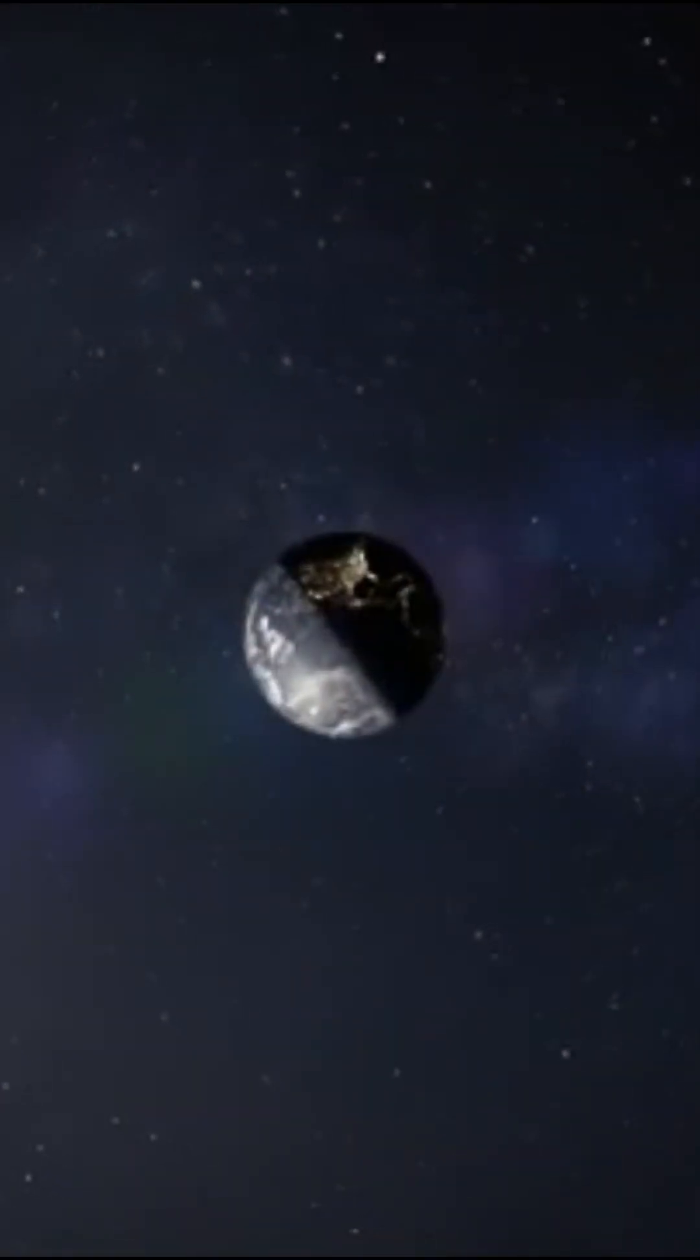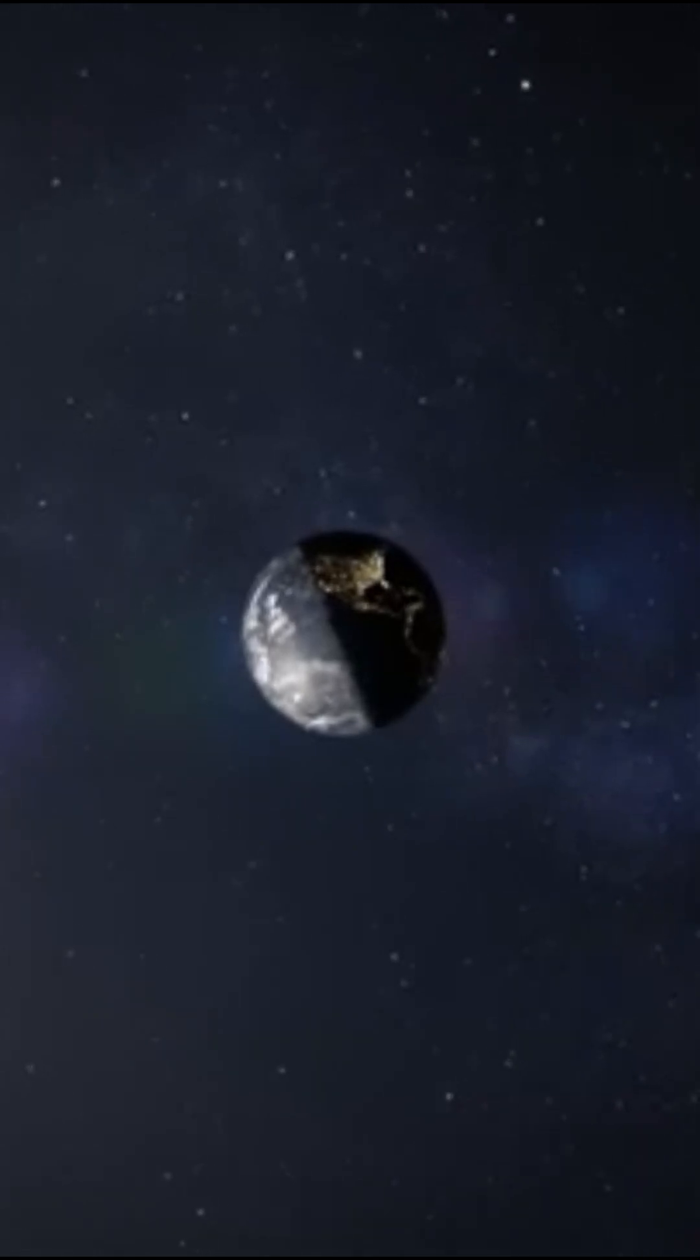Our magic ship has now left Earth, and you can already see it in the distance through the porthole. But in the distance, a red ball is already looming. It's our neighboring planet Mars.